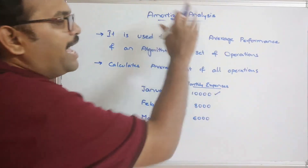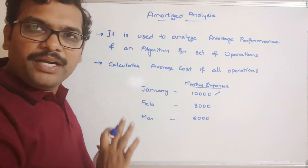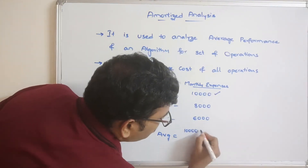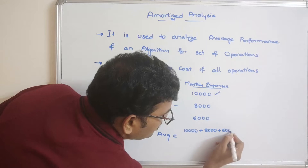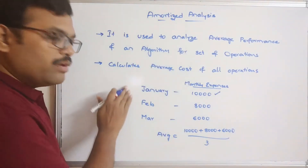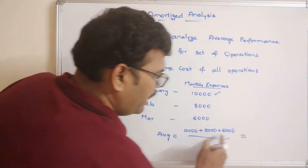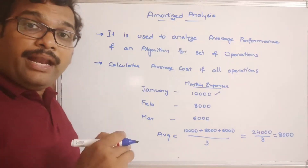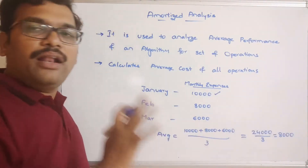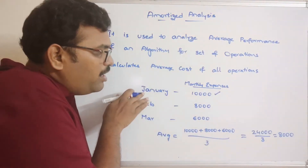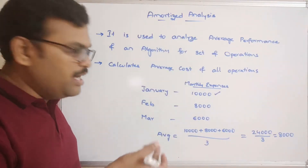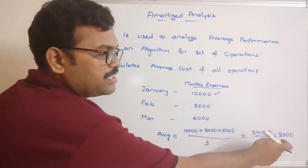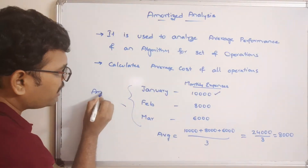Amortized analysis means averaging the cost of each and every operation. The average of 10,000 plus 8,000 plus 6,000 divided by 3 equals 24,000 divided by 3, which is 8,000. So a man needs 8,000 rupees on average to run a family — less than the worst case. This is what we call amortized analysis.